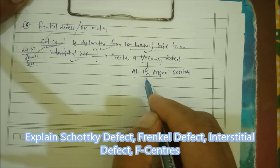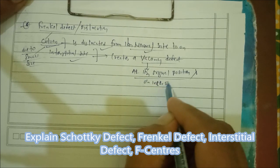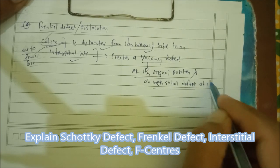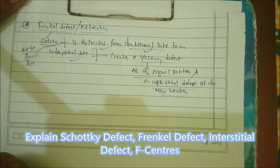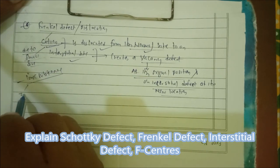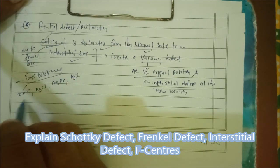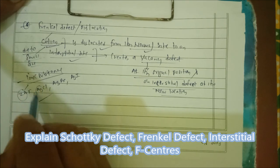The displacement also creates an interstitial defect at the cation's new location. Ionic substances like ZnS, AgCl, AgBr, and AgI show Frenkel defect because the size of the Zn²⁺ ion and Ag⁺ ion is small.